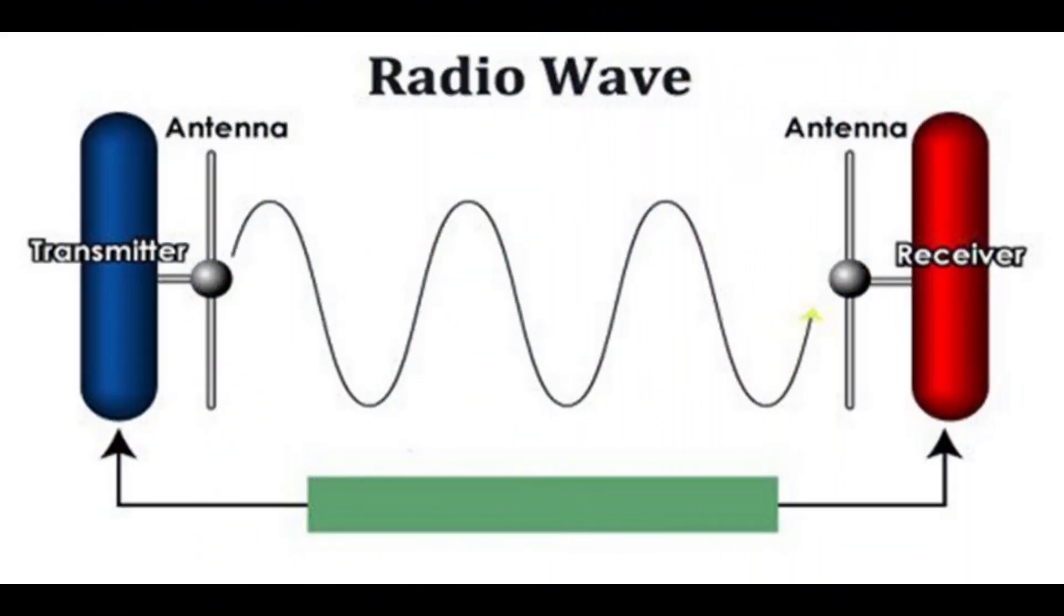The radio spectrum is divided into a number of radio bands on the basis of frequency, allocated to different uses. In radio communication systems, information is transported across space using radio waves. At the sending end, the information to be sent, in the form of a time-varying electrical signal, is applied to a radio transmitter.